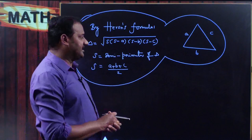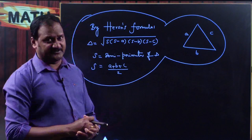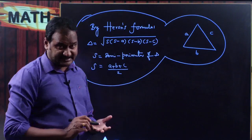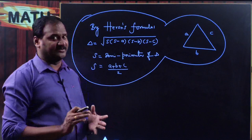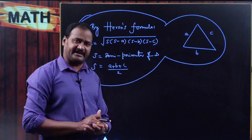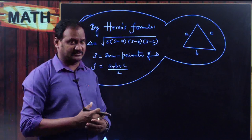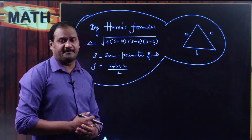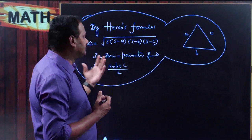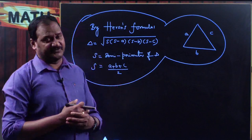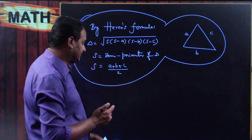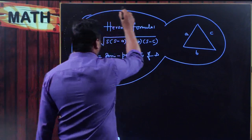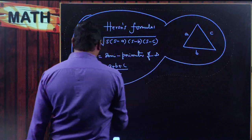Basing on this formula, we are going to derive what is the formula for area of triangle exclusively — that is, an isosceles triangle as well as an equilateral triangle. Those formulas can be derived by other ways also, but we are going to utilize Heron's formula to derive the formula for area of equilateral triangle as well as area of isosceles triangle.